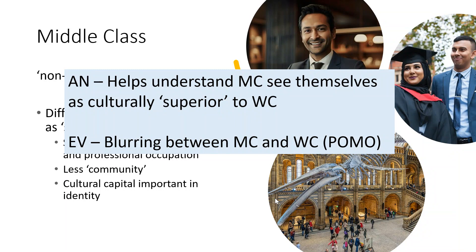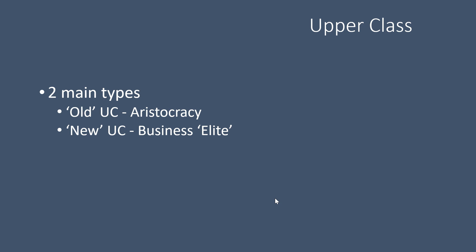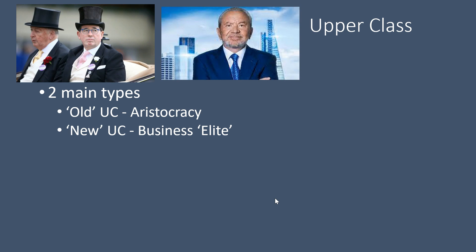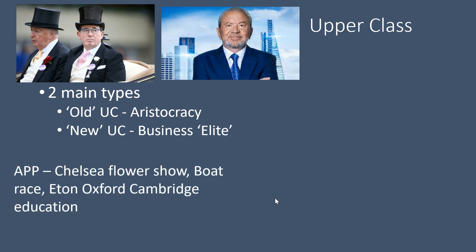However, there is a blurring between middle and working class. As a personal example: I'm from a working class background — grew up on a council estate, parents did manual jobs — but I'm now a teacher, traditionally a middle class occupation, with my own house and holidays. This shows the blurring between traditional working class and middle class through employment opportunities. Moving on to upper class: there are two distinct types — the old upper class, seen as the aristocracy, and the new upper class, the self-made business elite with great wealth.